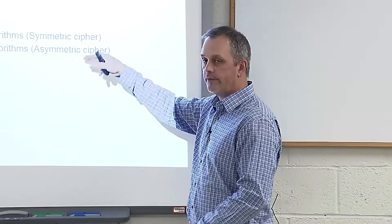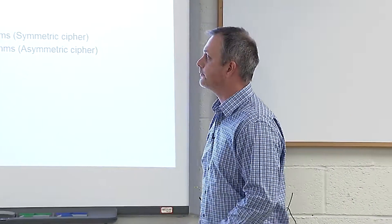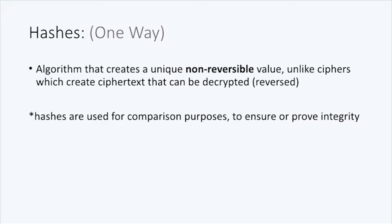We'll start talking about hash algorithms first. Hashes are a one-way algorithm — an algorithm that creates a unique, non-reversible value, very much unlike a cipher, which creates ciphertext that can easily be decrypted or reversed. Because it's non-reversible and one-way, you can only use a hash for comparative purposes: to ensure or prove integrity that a piece of data was received the same way it was sent, by computing a hash.